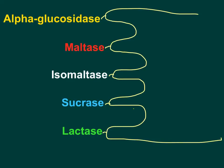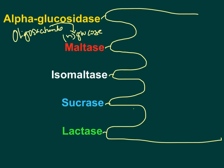Alpha glucosidase acts on oligosaccharides and releases one glucose at a time from the non-reducing end. So oligosaccharides enter, and individual glucose molecules — three to nine of them — are released. Alpha glucosidase works sequentially on the non-reducing end of oligosaccharides to release individual glucose molecules.